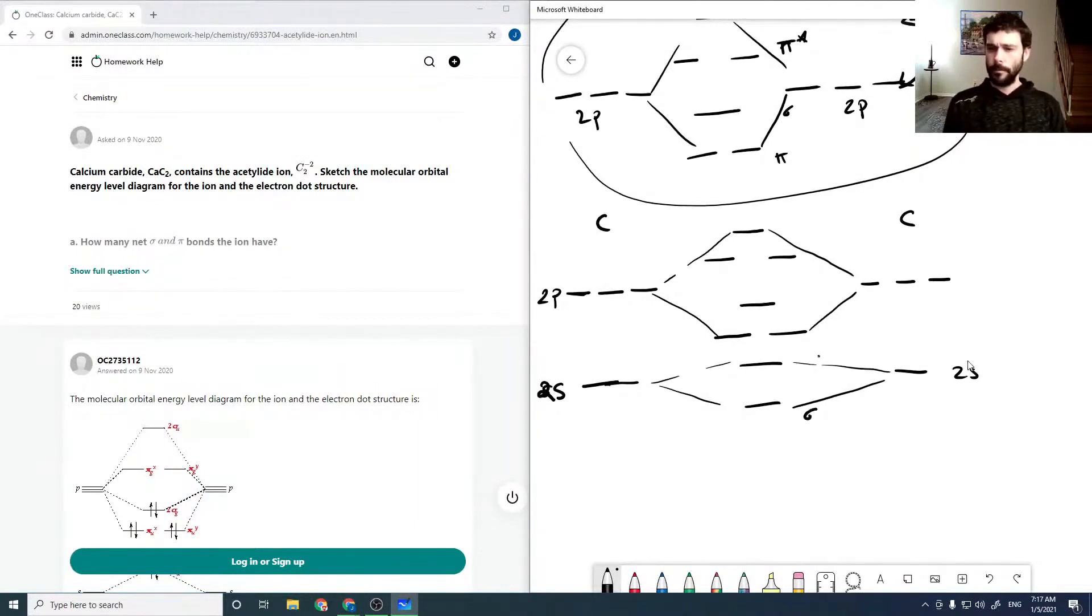So we've got a sigma, a sigma star, a pi, sigma, pi star, and sigma star, where the unstarred molecular orbitals are bonding, and the starred are anti-bonding.